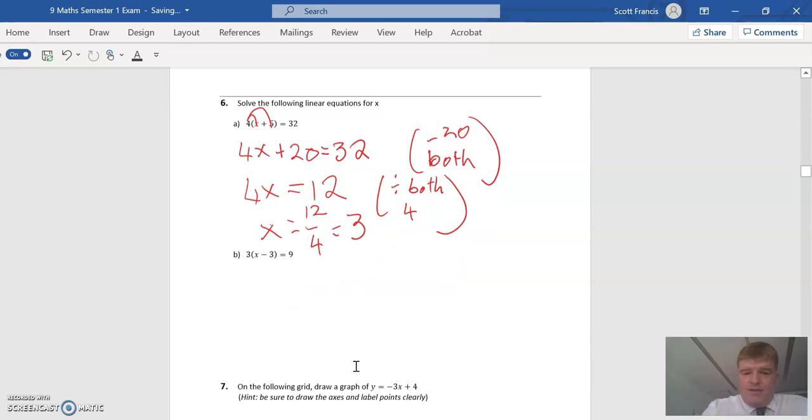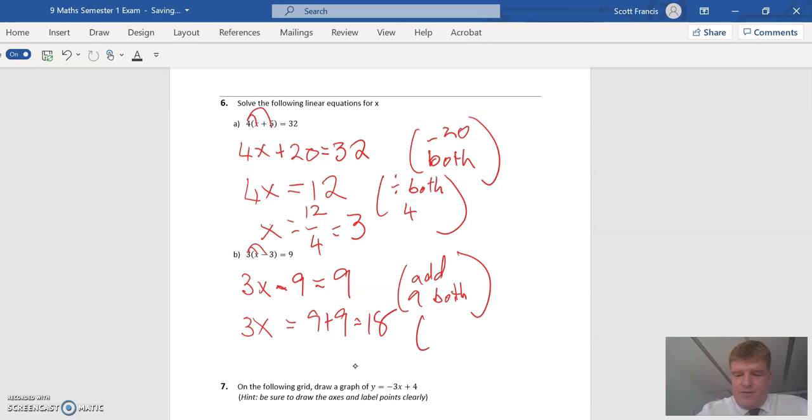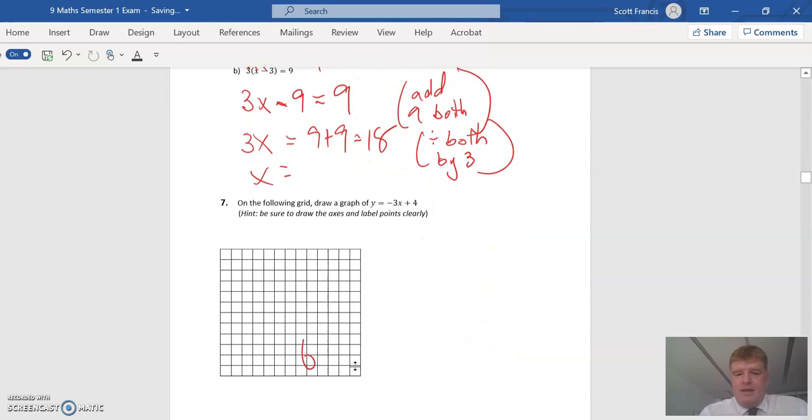Next one. 3(x - 3) equals 9. So 3 times x and 3 times minus 3, so it's 3x minus 9. Just be careful, 3 times 3 is 9 but there is a positive and a negative, so it's negative overall equals 9. Let's add 9 to both sides. So 3x minus 9 plus 9 is just 3x equals 18. Now we're going to divide both by 3. So x equals 6.